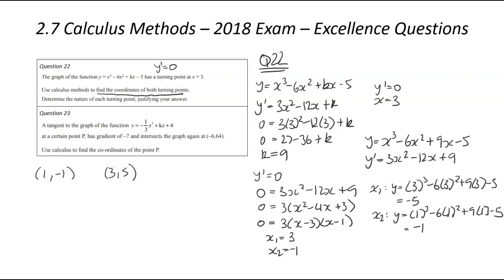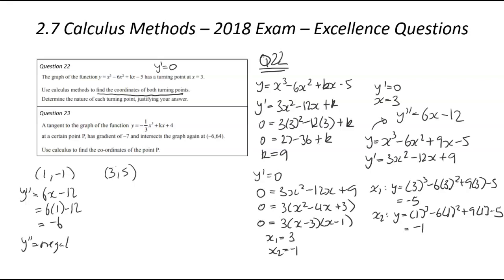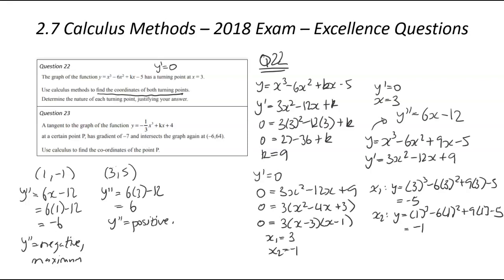The next step is determining the nature — are these minimums or maximums? I always use the second derivative test. So y'' equals 6x minus 12. For x equals 1: y'' equals 6 times 1 minus 12, which is negative 6. As y'' is negative, we have a maximum at (1, negative 1). For x equals 3: y'' equals 6 times 3 minus 12, which is 18 minus 12 equals positive 6. So y'' is positive here, which makes (3, negative 5) the minimum.